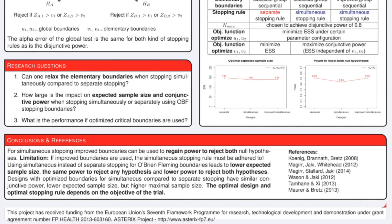So let's come back to the three questions. Can one relax the elementary boundaries when stopping simultaneously compared to separate stopping? Yes, but if improved boundaries are used, the simultaneous stopping rule must be adhered to. How large is the impact on expected sample size and power when stopping simultaneously or separately using O'Brien-Fleming stopping boundaries? A moderate decrease in expected sample size and conjunctive power is observed; the disjunctive power stays the same. What is the performance if optimized critical boundaries are used? If optimized boundaries are used, there is no loss in conjunctive power for the simultaneous stopping rule when using improved boundaries. However, the maximum sample size is larger than under separate stopping. Overall, the optimal design and optimal stopping rule depends on the objective of the trial.